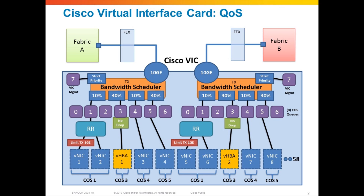So how do we leverage and use all of that? When we're defining VNICs in our service profile or in our VNIC templates, one of the things that we can do is we can assign a VNIC to a class of service. Here, VNIC 3 has been assigned to class of service 4, a QoS policy. And when I've done that, I've basically associated VNIC 3 to the cost-based queue four.